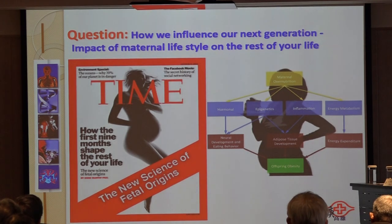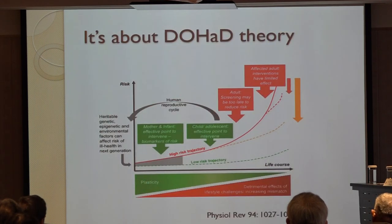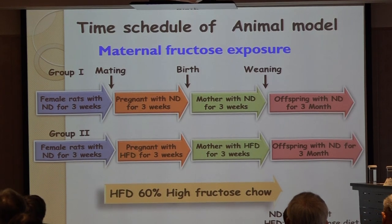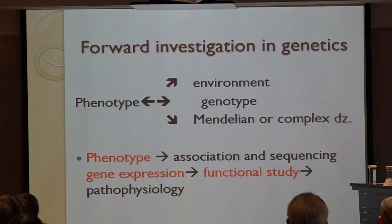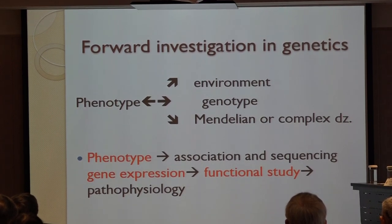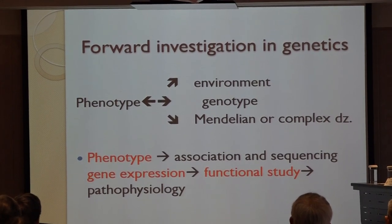The question concerns non-communicable diseases such as diabetes or cancer, and part of the reason why people develop these diseases may be due to maternal nutrition. This relates to the DOHaD theory — developmental origins of health and disease. Our study design is simple: one group is the control, and the other is exposed to maternal fructose during lactation and pregnancy periods. We use a forward investigation approach — we find the phenotype and then investigate the genetics.